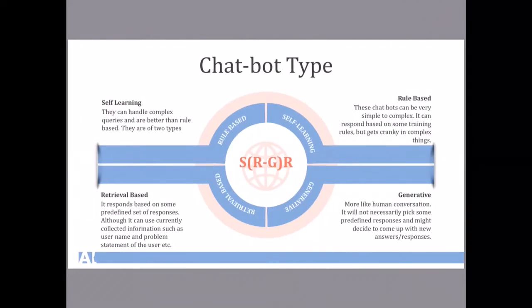So in short chatbots are of two types. Although it would be very critical to say that they are only of two types because there are different techniques and methods people use, but on high level just imagine they are of two types. One is the rule based - you can see on the top right these chatbots can be very simple to complex and it can respond based on some training rules but gets very upset in complex things.